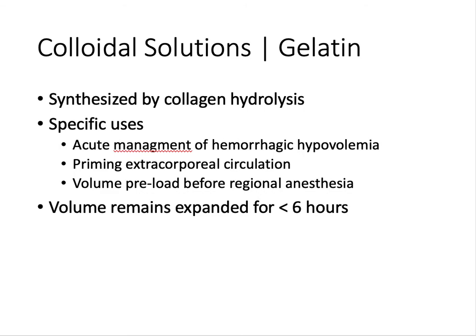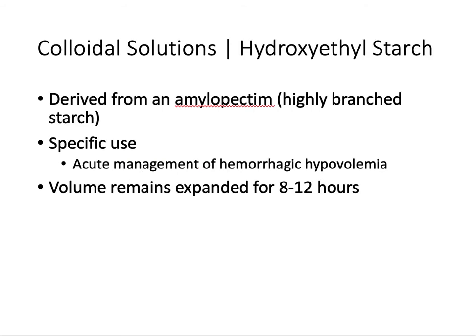Gelatin is a synthetic colloidal solution synthesized from collagen hydrolysis. It is used for acute management of hemorrhagic hypovolemia, priming extracorporeal circulation in bypass surgery, and preloading patient volume before regional anesthesia. It is the shortest-acting solution, expanding volume for less than 6 hours. Hydroxyethyl starch, derived from amylopectin, is a highly branched starch used for acute management of hemorrhagic hypovolemia and expands volume for 8 to 12 hours.